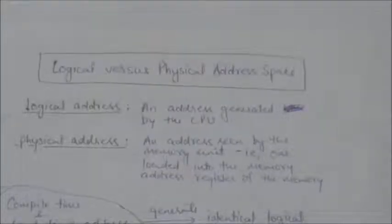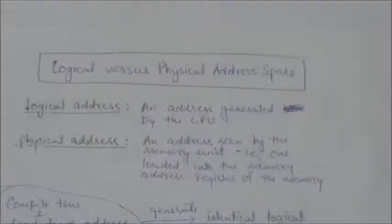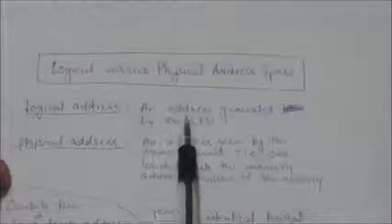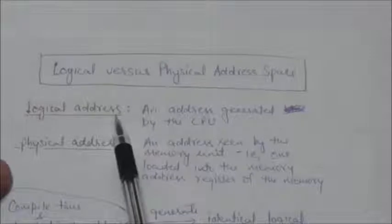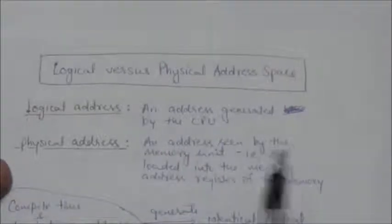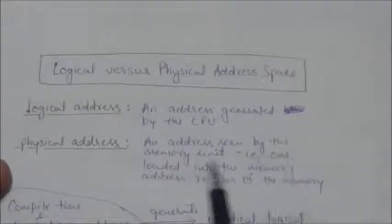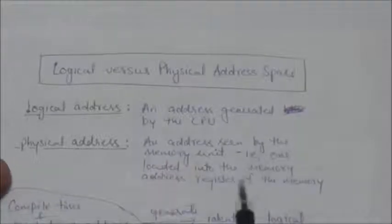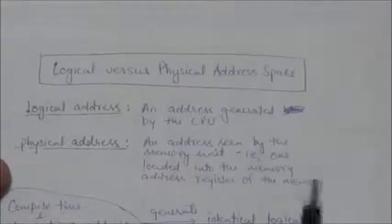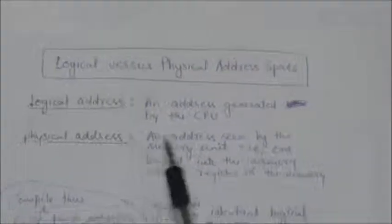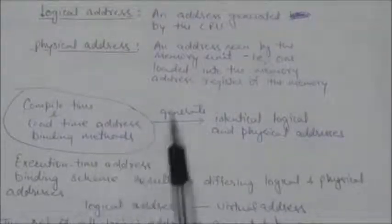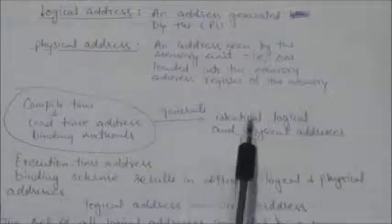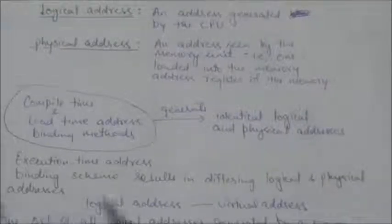In this tutorial we will study about logical versus physical address space. An address which is generated by the CPU is referred to as a logical address, whereas an address seen by the memory unit — that is, one loaded into the memory address register — is referred to as a physical address. Compile time and load time address binding methods generate identical logical and physical addresses.